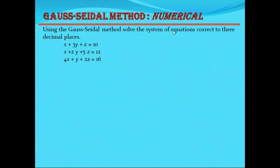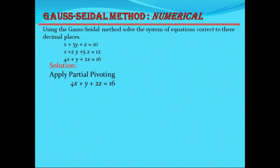If you observe these three equations, they are not diagonally dominant, so we need to change the order. By applying partial pivoting, we can get three new equations as the first, second, and third equation. Now if you observe, these equations are diagonally dominant.